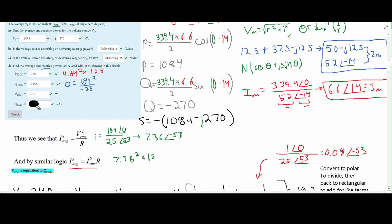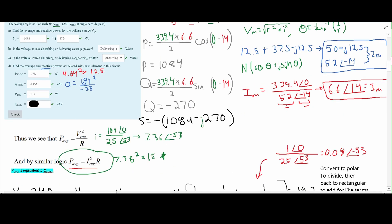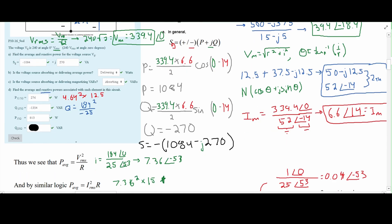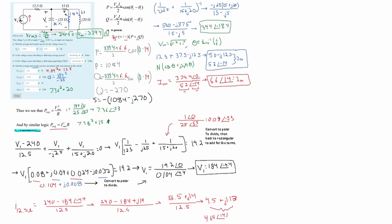Finally, we solve Q for the j20 ohm inductor. Since it's in series with the 15 ohm resistor, the current is the same: 7.36 A. Using Q = IRMS² × X_L, where X_L = 20 (dropping the j), we get Q = 7.36² × 20 ≈ 1083 VARs. That completes the solution. For more network analysis problems, there's a playlist, and notes covering this material are linked in the description.